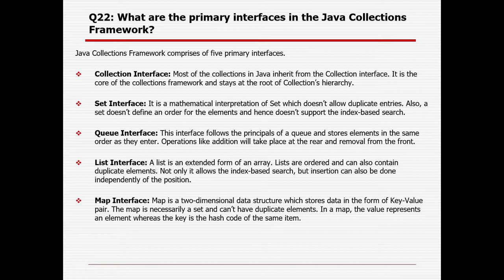The List interface is an extended form of an array. Lists are ordered and can contain duplicate elements. Not only does it allow index-based search, but insertion can be done independent of position, and insertion and deletion are possible from both sides. The Map interface is used for two-dimensional data structures where key-value pairs are stored. Keys must be unique while values can be duplicate; the key is the hash code for the item.